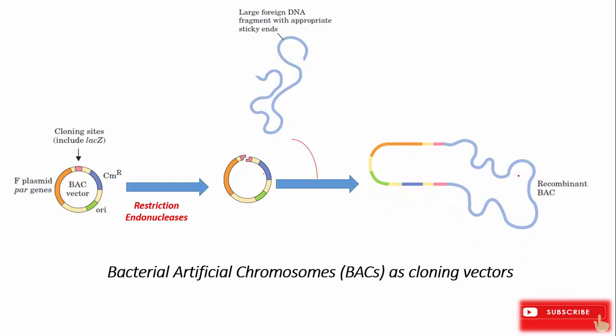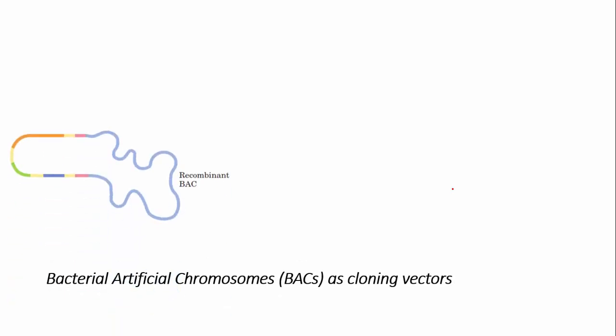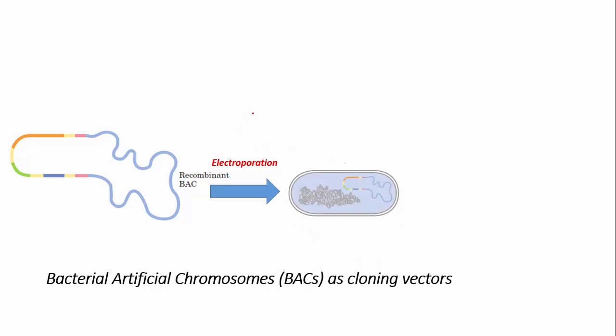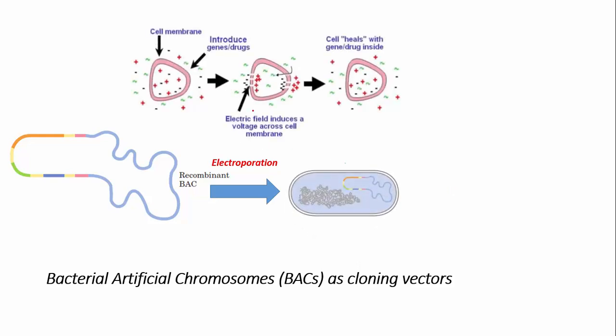This forms a recombinant BAC vector. Once the recombinant BAC vector is formed, we transfer it into bacterial cells by the process of electroporation. In electroporation, an electric field is applied, which creates pores in the bacterial cell membrane.